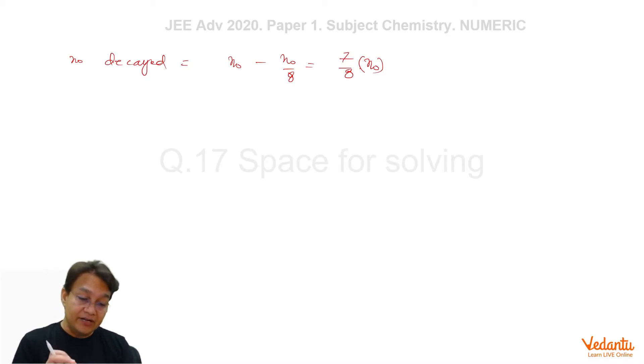And in every decay, that's going to give you eight alpha particles. So that means number of alpha particles emitted is equal to 7 by 8 into N0 into 8. That comes out to be 7N0. Now let us substitute the value of N0 here.